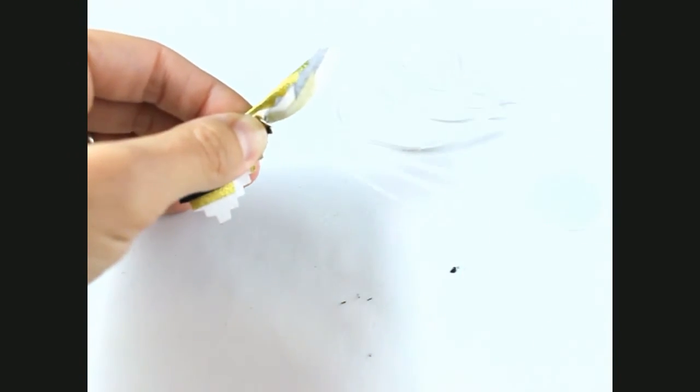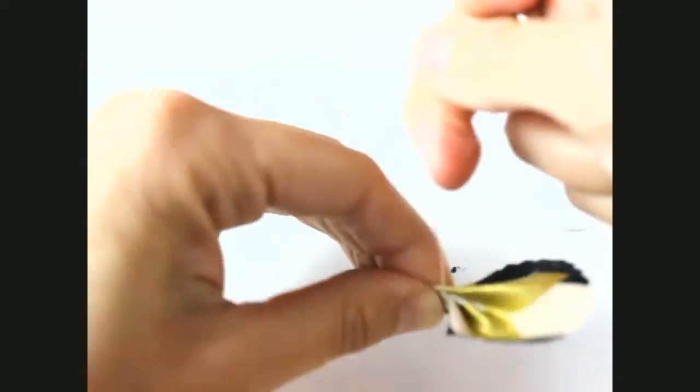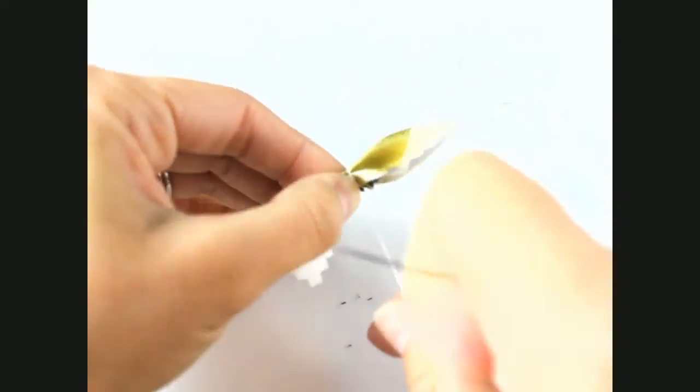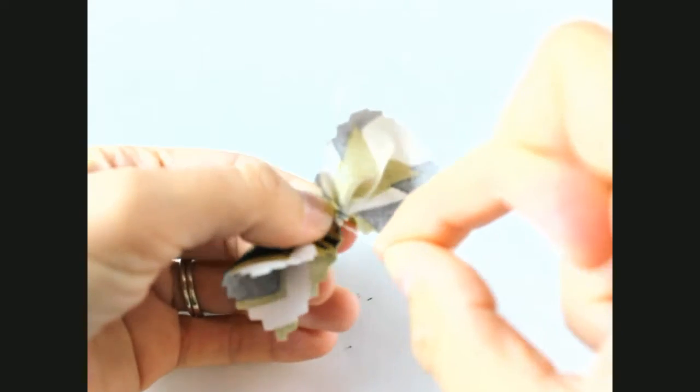And just wrap your thread around your fabric like this. Okay, then just secure off the edge in the back and cut that in the back off.